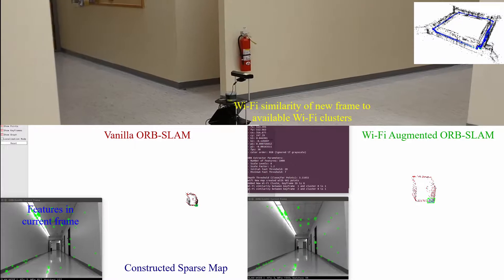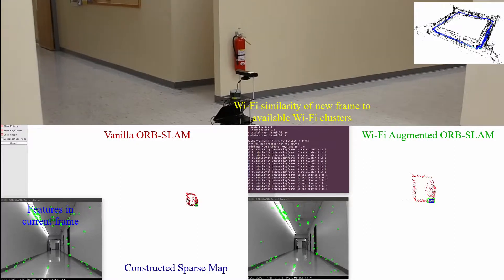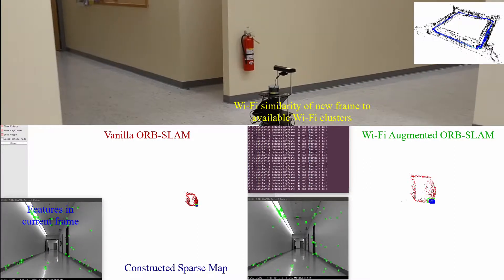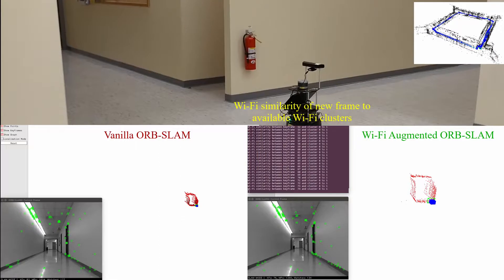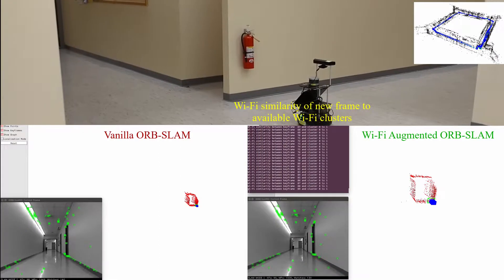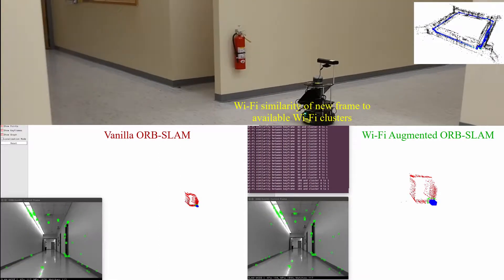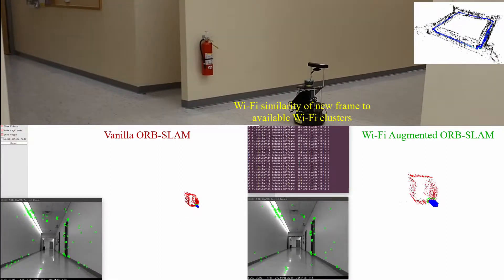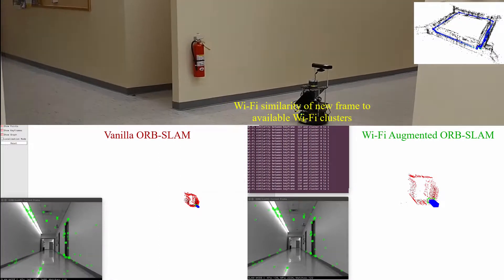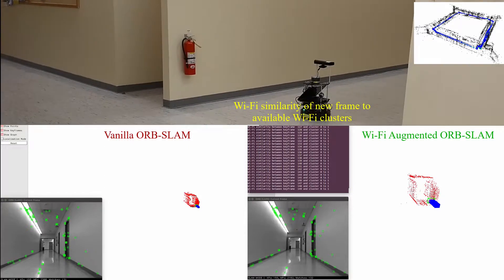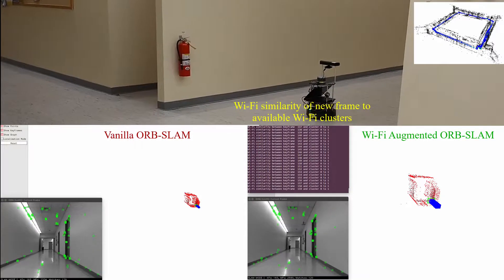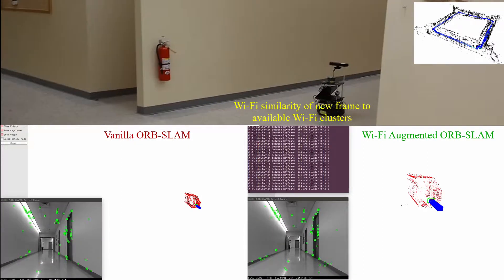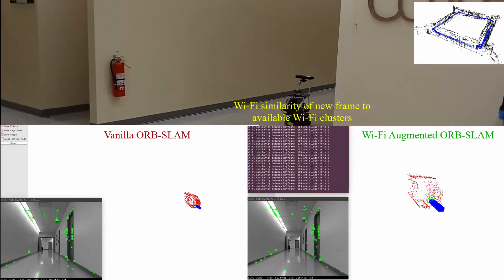The Wi-Fi augmented ORB-SLAM is shown in the bottom right and the vanilla version is in the bottom left. The upper window shows the TurtleBot in operation. The robot pauses every 3 or 4 meters for about 10 to 15 seconds for Wi-Fi signal strength accumulation.